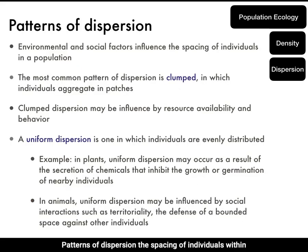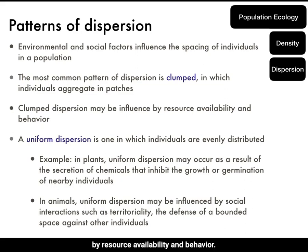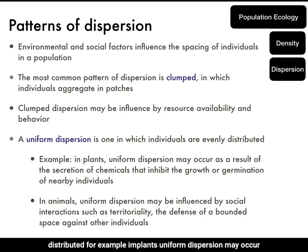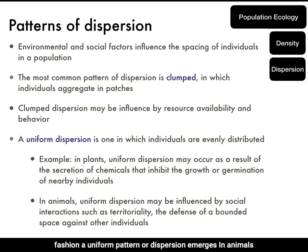Patterns of dispersion — the spacing of individuals within a population — are influenced by environmental and social factors. The most common pattern of dispersion is clumped, where individuals aggregate in patches. Clumped dispersion may be influenced by resource availability and behavior. A uniform dispersion is one in which individuals are evenly distributed. In plants, uniform dispersion may occur as a result of the secretion of chemicals that inhibit the growth or germination of nearby individuals, so even if seeds are distributed randomly or in a clumped fashion, a uniform pattern emerges.